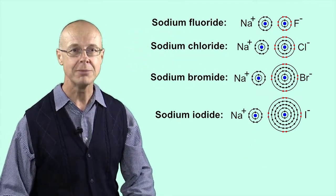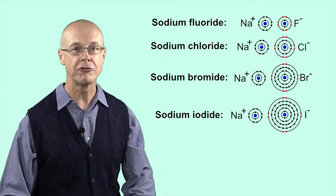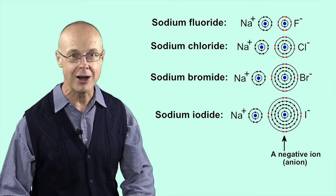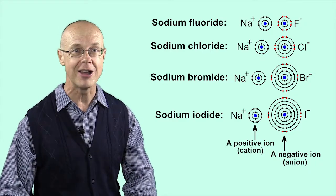A halogen atom steals a valence electron from sodium, forming a negative ion, called an anion, while sodium forms a positive ion, called a cation.